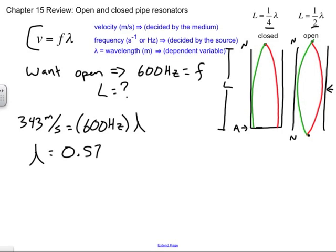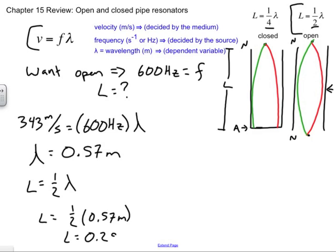Lambda is going to be equal to 0.57, I'll go ahead and round it there, 0.57 meters. Now I go in and I just grab my open pipe resonator equation and I find that L is going to be equal to half that. So L is going to be one-half of 0.57 meters, or L equal to 0.29 meters. There's my L.